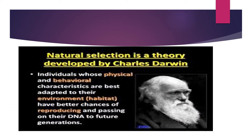Natural selection is a theory developed by Charles Darwin. Individuals whose physical and behavioral characteristics are best adapted to their environment, that is their habitat, have better chances of reproducing and passing on their DNA to future generations.